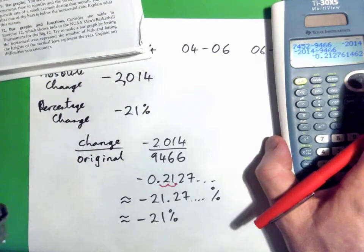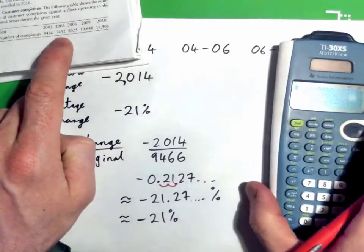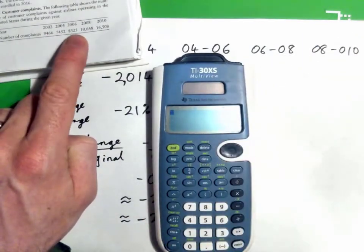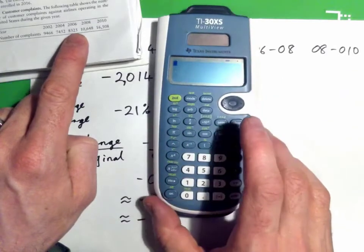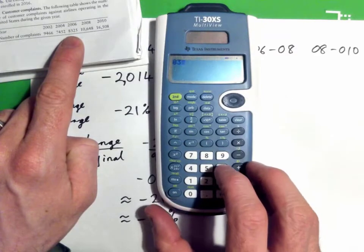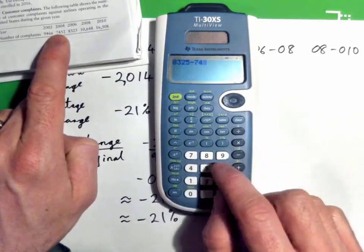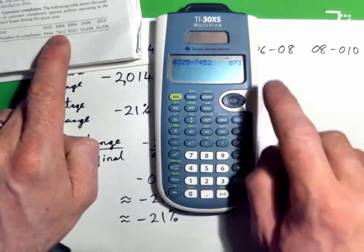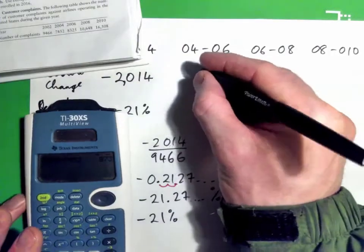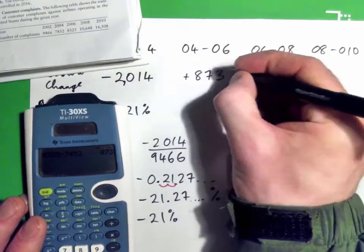For 2004 to 2006: the 2004 amount and the 2006 amount — it went up. You take the latest number, 8,325, and subtract the original number, 7,452, and the change is 873. So from 2004 to 2006 complaints increased by 873.